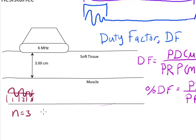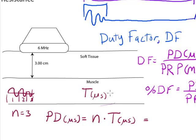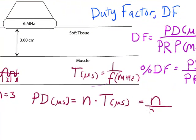The other thing I need is the period. Pulse duration in microseconds is equal to the number of pulse cycles times the period, the amount of time for each cycle. I could also write this, keeping in mind that the period in microseconds is equal to one over the frequency in megahertz. I can substitute this into this formula and get N over the frequency in megahertz, and that will make my calculation a little faster.